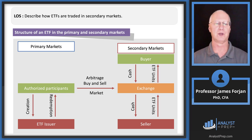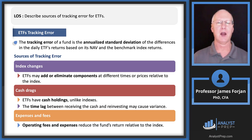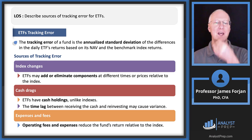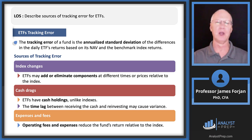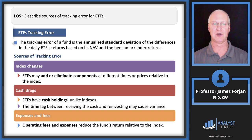Now let's talk about tracking error. I always tell my students: think of tracking error as a measure of error in terms of a standard deviation — this reduces it to its simplest form. The definition is the annualized standard deviation of the difference between the ETF's net asset value return and its benchmark. Standard deviation measures the average degree of error — sometimes above, sometimes below — and tracking error captures how consistently the ETF follows its target index.